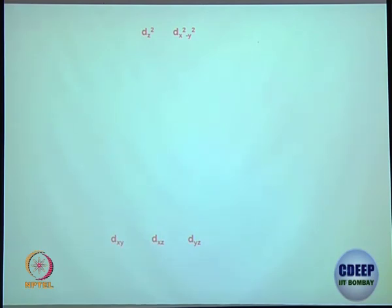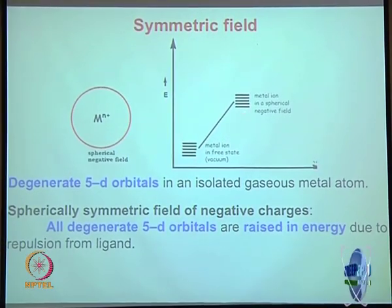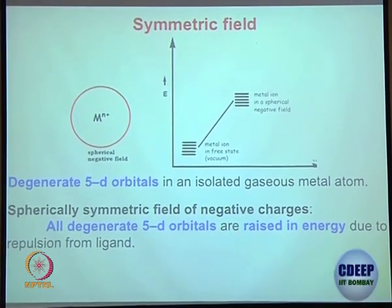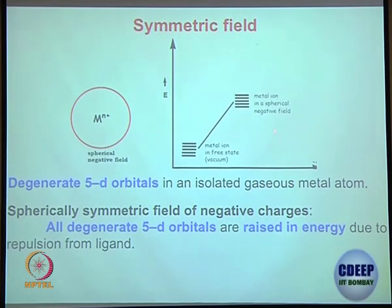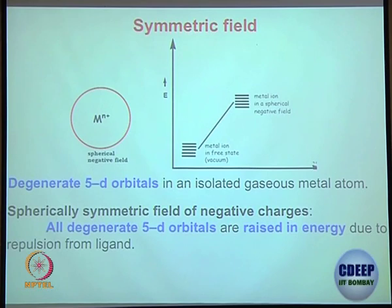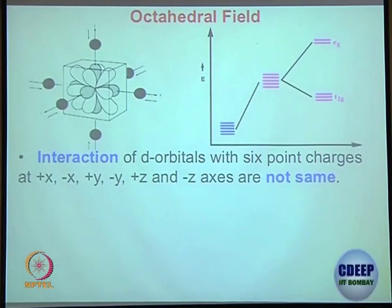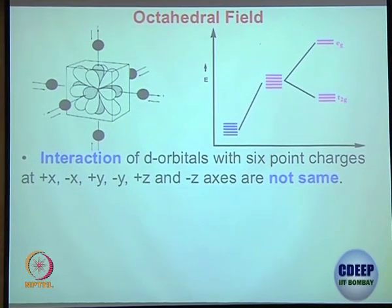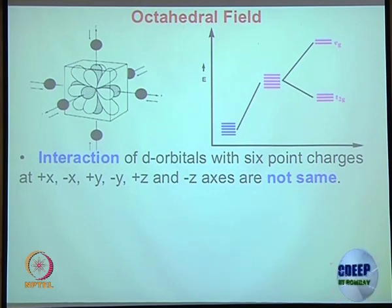Stabilized means stabilized with respect to the barycenter, not with respect to the free ion. With respect to the free metal ion, when you form a metal complex, all d orbitals will have a net destabilization — their energy goes up. But some go up more and some go less, giving relative stabilization and destabilization. This is what the octahedral field is all about: 6 ligands surrounding the metal center, 5 d orbitals getting destabilized and further split — they are no longer degenerate.